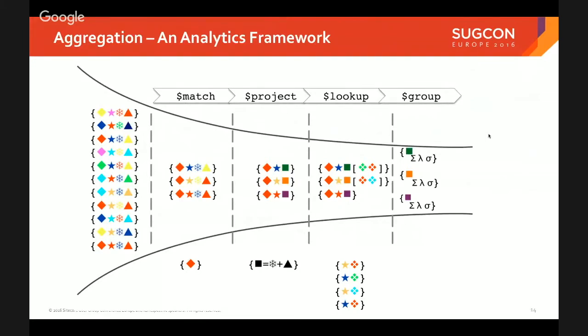The aggregation framework gives you things you know and love from SQL databases. We have a match operator — essentially a selector for the set of data you want pulled out. Then a project, which slices the data to only give you what you're interested in. Then a lookup, which is effectively a join so you can pull data from more than one collection. And then a group by, which does analytic summation. For example: find all users who logged in from Copenhagen, see their clickstream, join that with our supplier list to see if any suppliers are in that list, then group and find the total number of visits. This is exactly what the aggregation framework does in XDB to generate the reports you see in your reporting database.